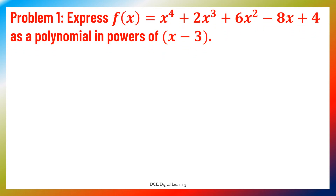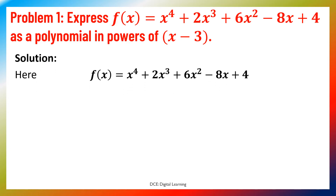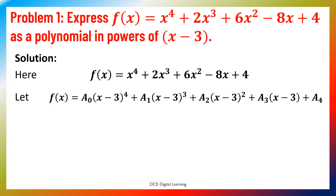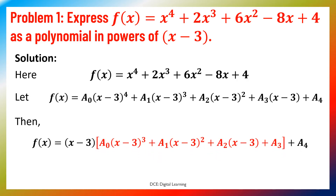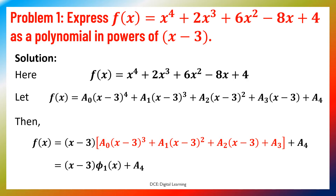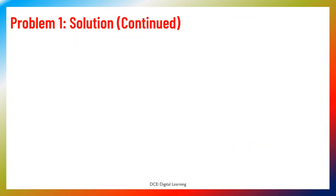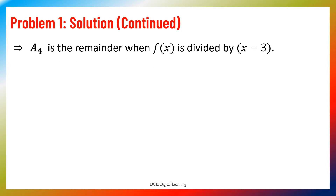Problem 1: Express f(x) equals x⁴ + 2x³ + 6x² − 8x + 4 as a polynomial in powers of (x − 3). We let f(x) equal a₀(x−3)⁴ + a₁(x−3)³ + a₂(x−3)² + a₃(x−3) + a₄. Then f(x) can be written as (x−3) times [a₀(x−3)³ + a₁(x−3)² + a₂(x−3) + a₃] + a₄, which implies a₄ is the remainder when f(x) is divided by (x−3).